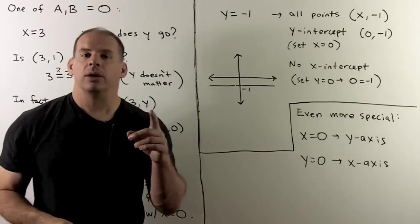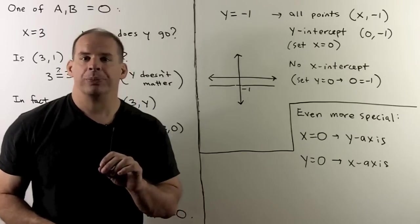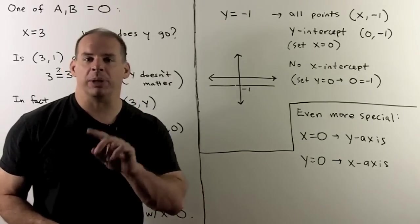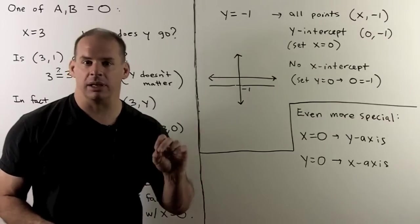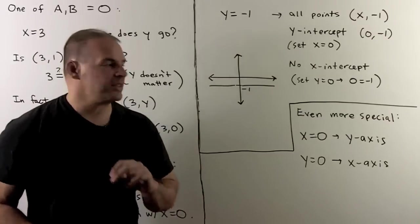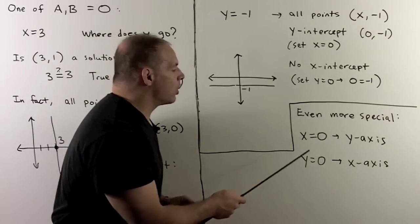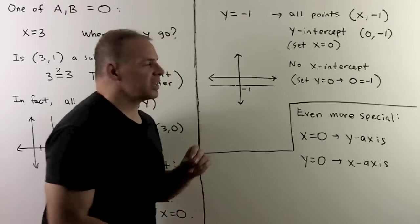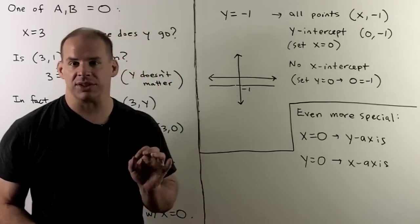Taking one of a or b equal to 0 and also c equal to 0 gives x equals 0 or y equals 0, which are simply the y-axis and the x-axis respectively.